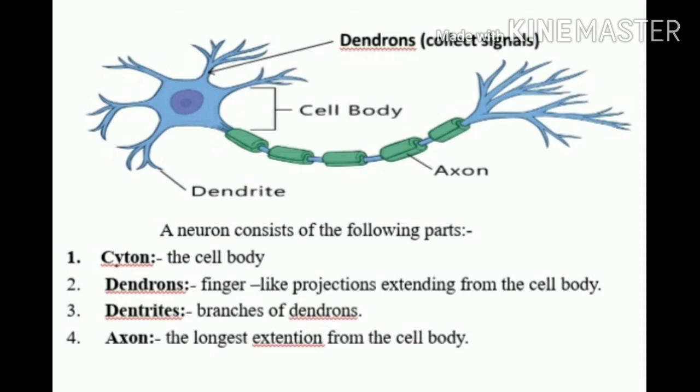A neuron consists of the following parts: number one, cyton — the cell body; number two, dendron — finger-like projections extending from the cell body; number three, dendrite — branches of dendron; number four, axon — the longest extension from the cell body. We'll draw the diagram nicely and color it.